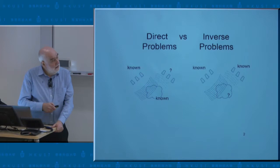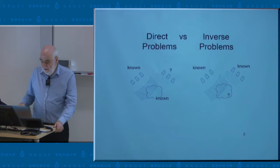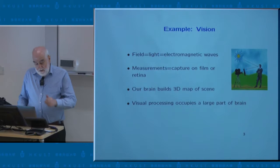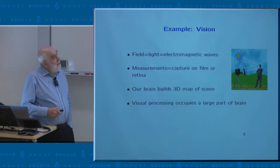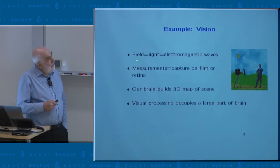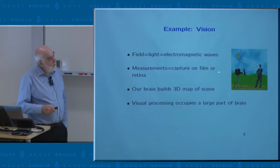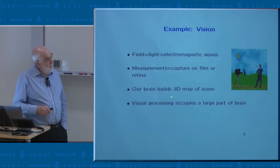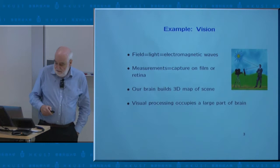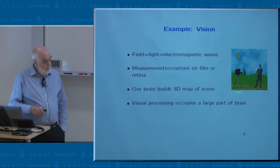This type of problem in inverse problems is called active measurements, because you are probing the medium with waves. I'm going to give some examples of passive measurements later on. We solve inverse problems all the time — we're solving one right now. In this case, the field, the waves, is light, which are electromagnetic waves. We measure the reflection of the light on the different objects with our retina, and from that our brain builds a three-dimensional, really amazing map of the scene. This occupies a large part of our brain.